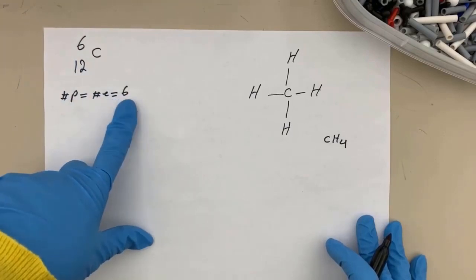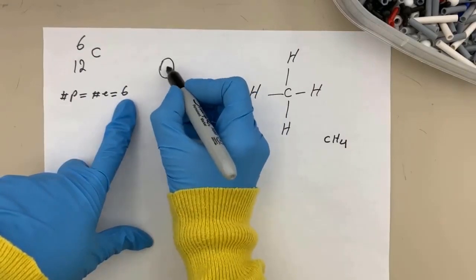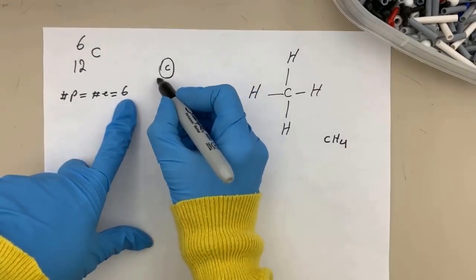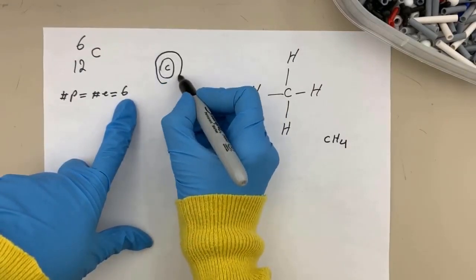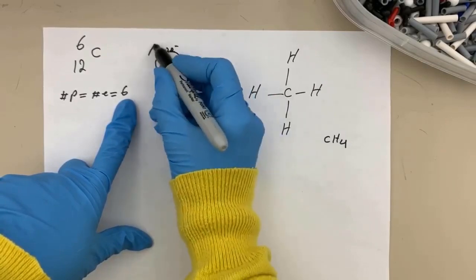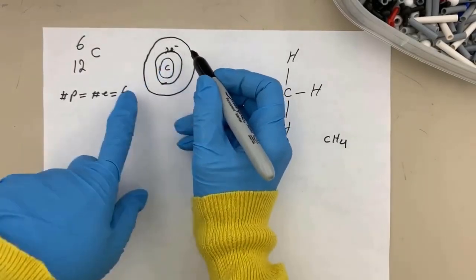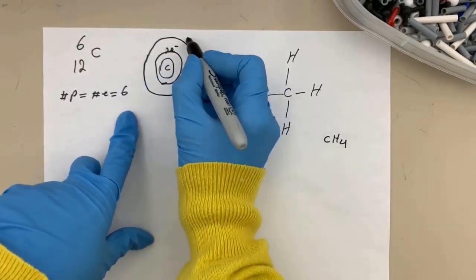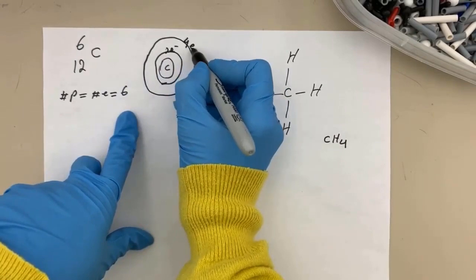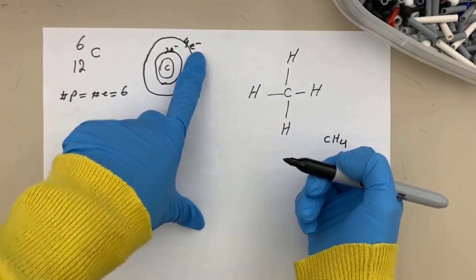I want to show you the electron distribution diagram for carbon. We put two electrons in the first shell, and six minus two gives us four electrons, which means the valence electrons of carbon are four.